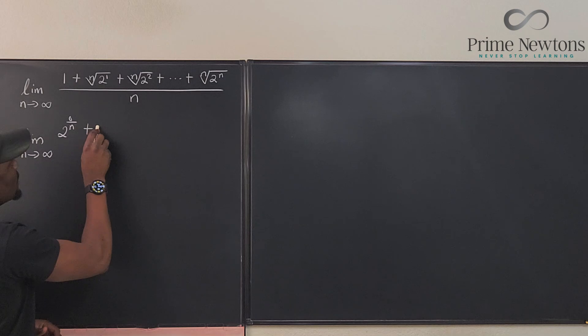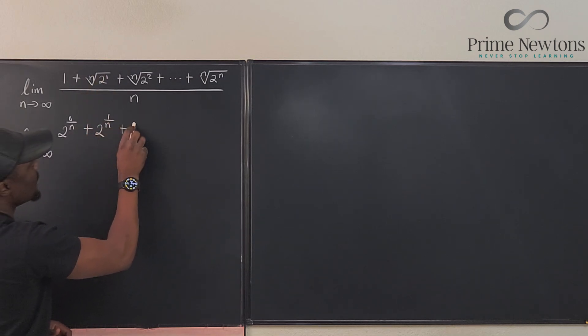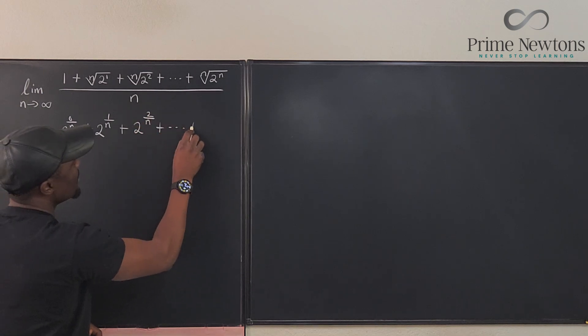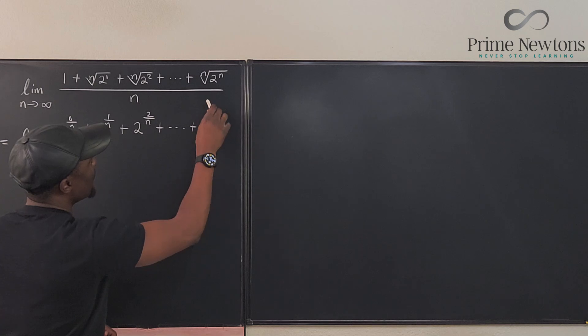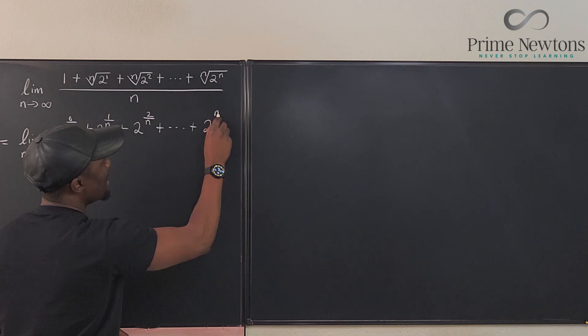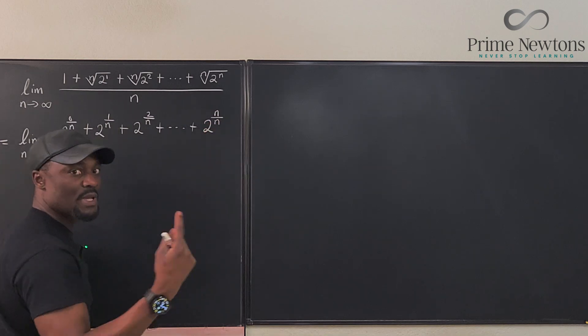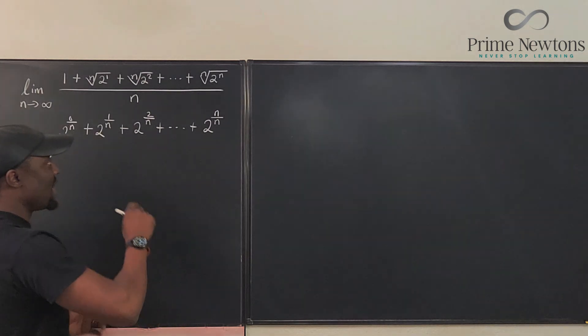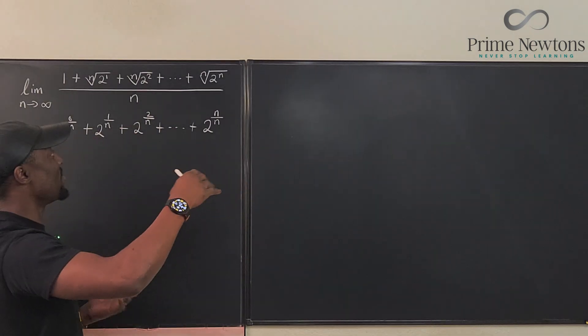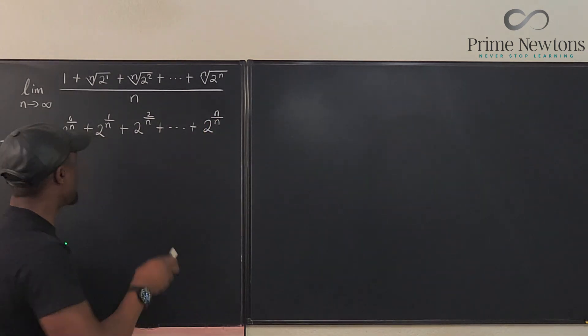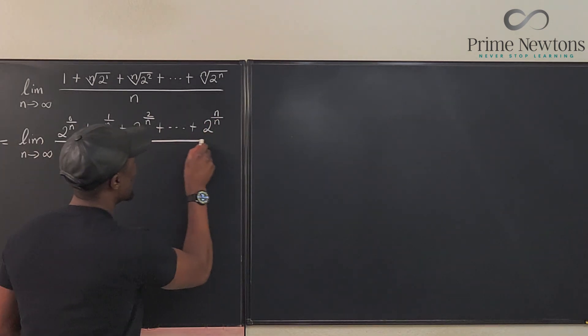This is plus 2 raised to power 1 over n, plus 2 raised to power 2 over n, plus we can continue to 2 raised to power... well, this becomes n over n. I can write it that way, n over n, which would be 2 raised to power 1. But I'm just going to leave it this way because there is a series, or a sequence on top, there's also a constant under. So let's leave it that way, everything divided by n.